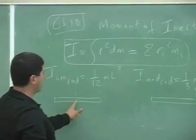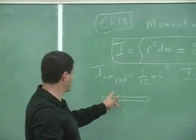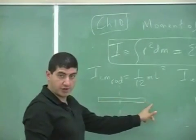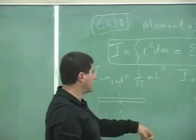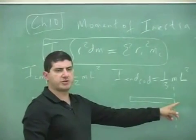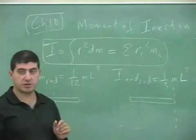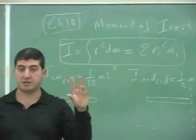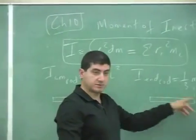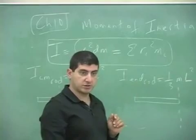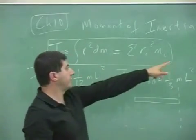Last time I showed you the proof of the moment of inertia of a uniform rod around its center. We integrated and I showed you that it's one-twelfth mL squared. I also showed you that the moment of inertia about the right end or left end is one-third mL squared. I showed that to you two ways: I reintegrated from the end and got one-third mL squared, and also I used the parallel axis theorem.